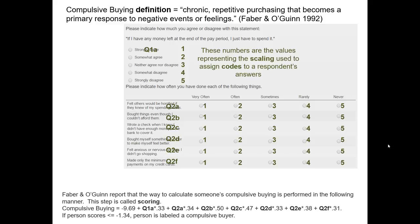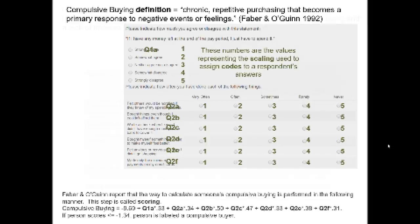If you look at the very bottom, you'll see that compulsive buying is equal to a math equation. If you see those bold terms — q1a, q2a, q2b, and so on — the idea is that we take those numerical values from the green section above and plug those corresponding values into that math equation and simply solve. According to the paper by Faber and O'Quinn, if somebody scores lower than negative 1.34 after completing that math equation, that person is labeled as a compulsive buyer.